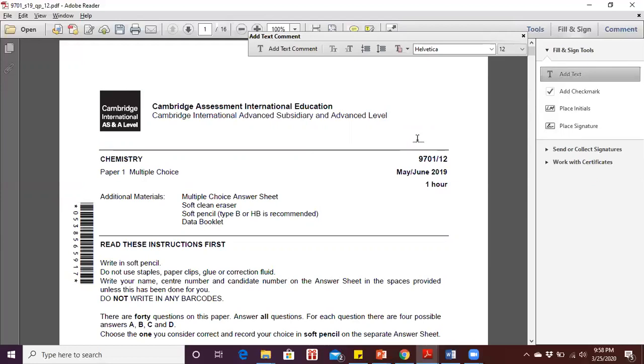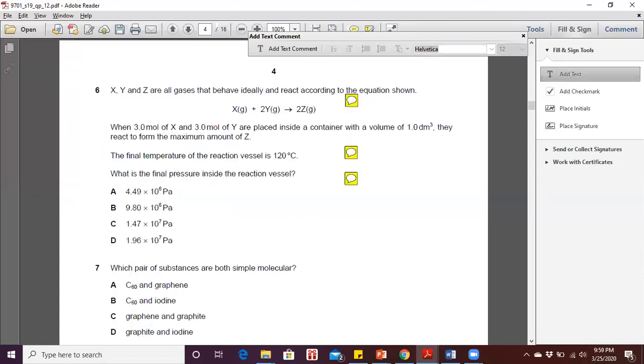Hello, so we are going to look at question number 4 from A-level chemistry paper 1 with code 9701-12 from May-June year 2019. Let's go to page number 4, Question 6.